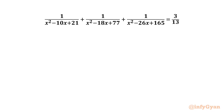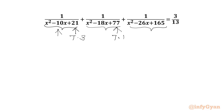We will begin this video by factoring the denominators. We will factorize our denominators. 21 is 7 times 3, and if we add 7 and 3 we get the middle term coefficient 10. Similarly, factorizing 77 gives 7 times 11, and adding both gives 18. Similarly, 165 is 15 times 11, and adding both gives 26.